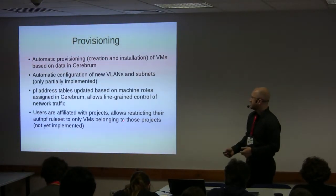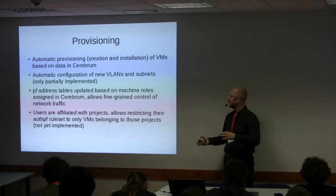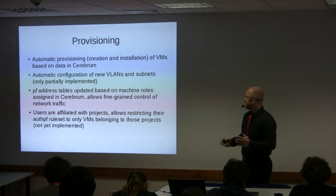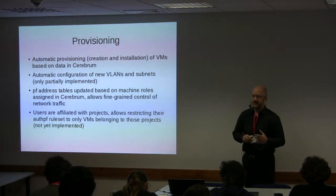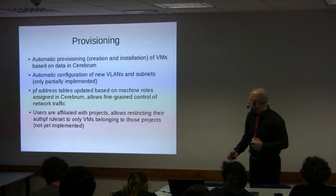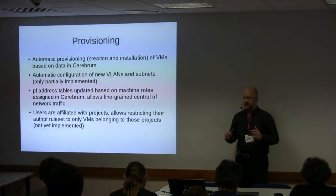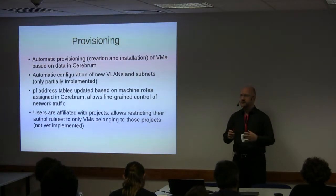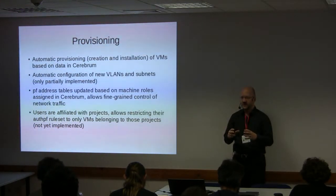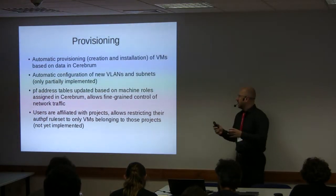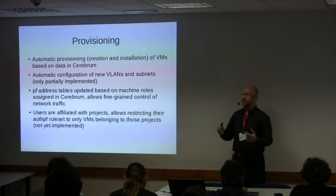Users are affiliated with projects, and actually everything in the system is affiliated with a project. This means we can also have firewall rules specific to groups of users — that's on the to-do list but not yet implemented. However, when a user on project 42 logs in, the authPF rules inserted into the PF rule set will only allow that user to access machines belonging to project 42.